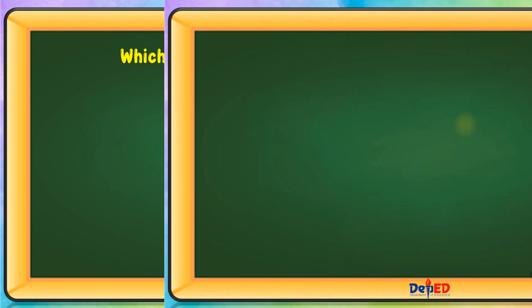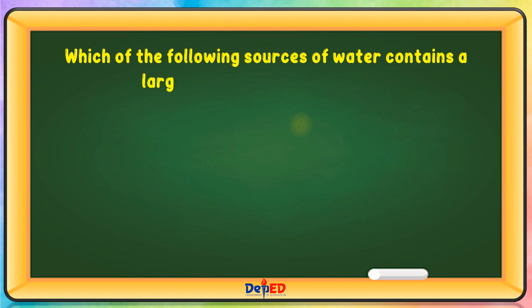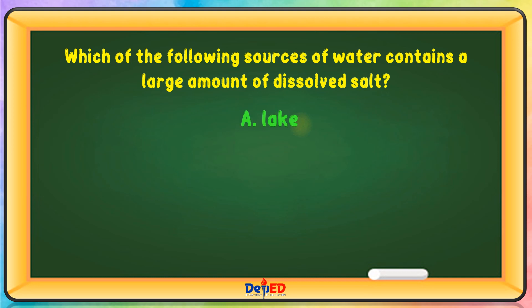Which of the following sources of water contains a large amount of dissolved salt? A. Lake. B. Sea. C. River. D. Falls. The answer is B.